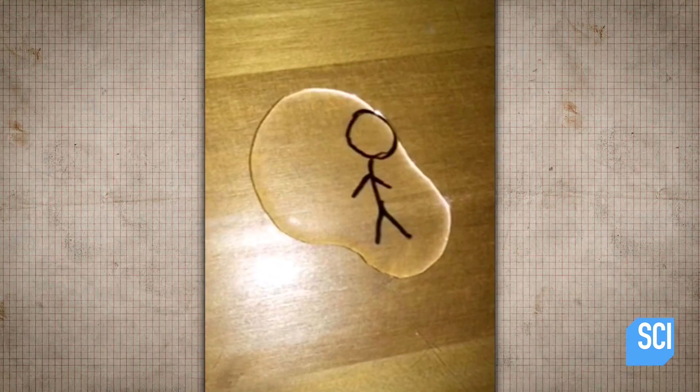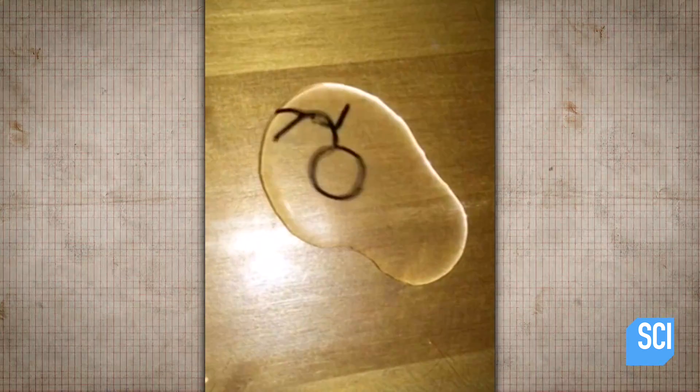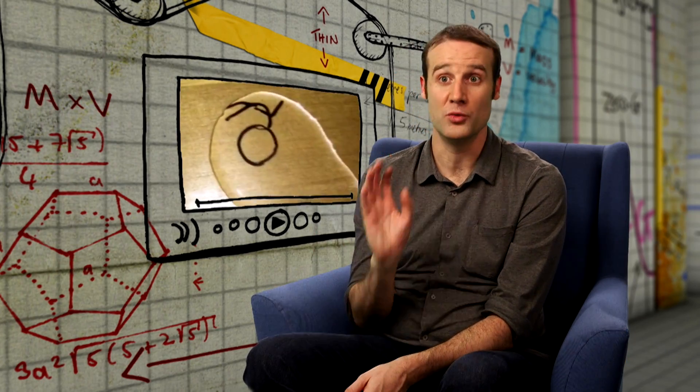And then all Kim has to do is blow on it to start it dancing. And that's the story of the Stick figure that became a real boy.